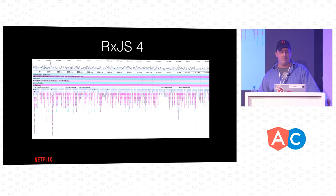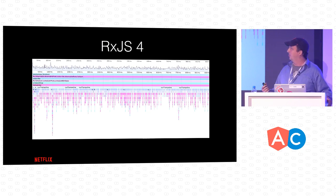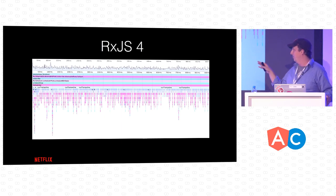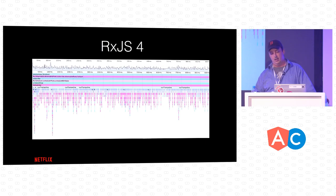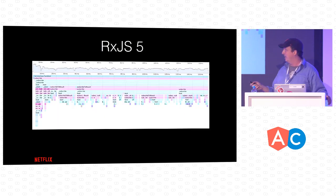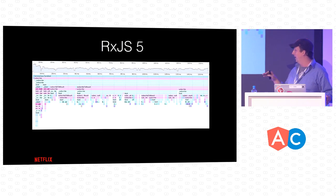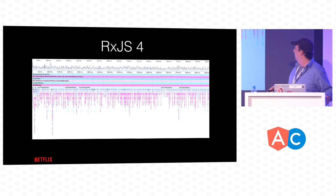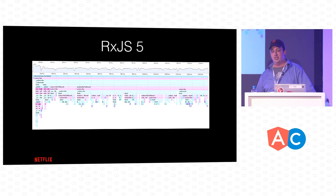Here's a flame chart in RxJS 4 running some code — you can see the depth gets pretty high and it's complicated through the middle with a lot of tiny calls. In RxJS 5, running exactly the same code, it's not quite as complicated, not quite as deep, and it actually executes faster. This has a lot to do with how we changed scheduling around the default.